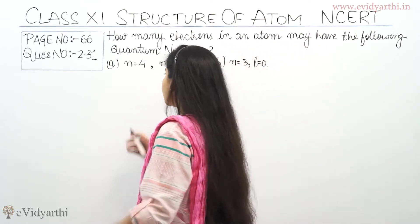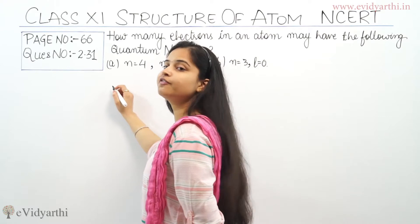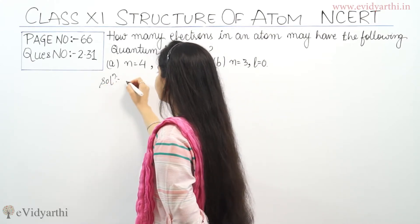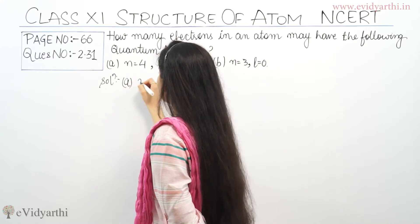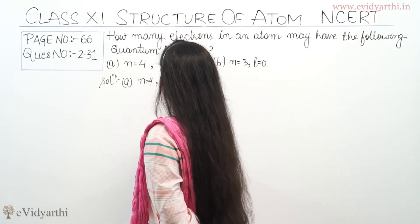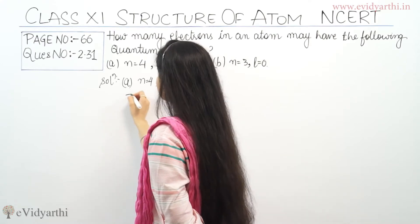So, n number may be passed 4th. I am solving the first part of this question. First part, n is equals to 4, ms is equals to minus 1/2.